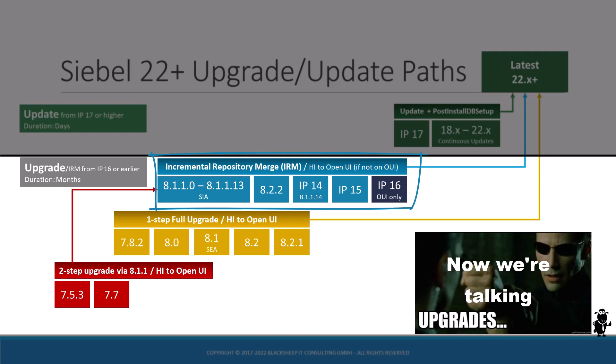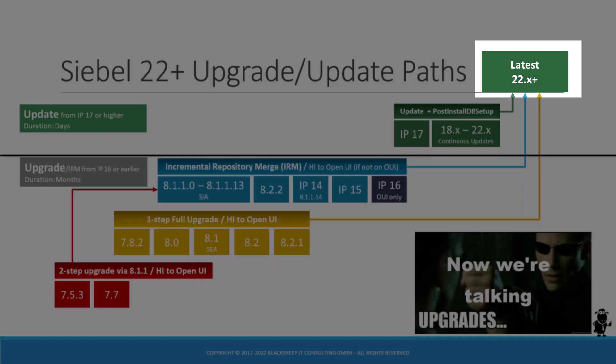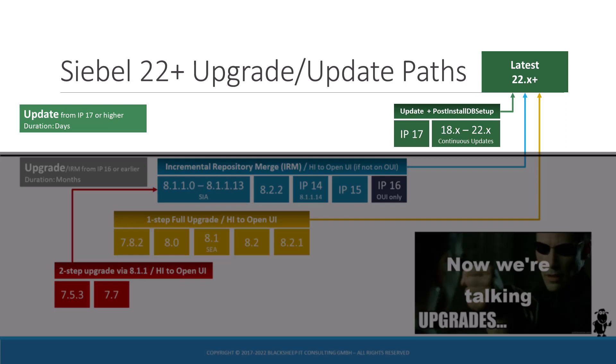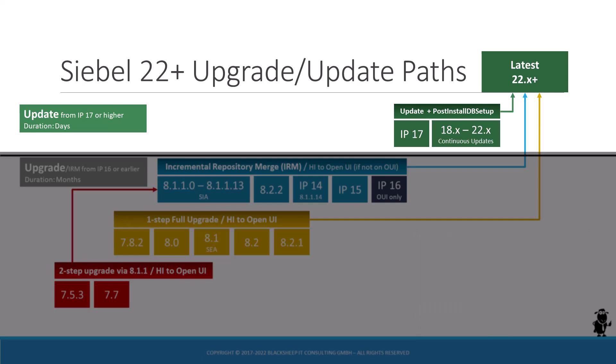You might not even have to migrate to OpenUI as you're already using it. Upgrade projects are conducted using an installation of the latest Siebel CRM release available at the time you start the project. If you already ran a successful Siebel upgrade to IP17 or higher, you no longer have to run a lengthy, costly upgrade project. To get from a post-IP17 release to the latest available update, you only have to execute the aforementioned update process. The real benefit of Oracle's continuous release model is evident here, as the update process will at most take a few person days.